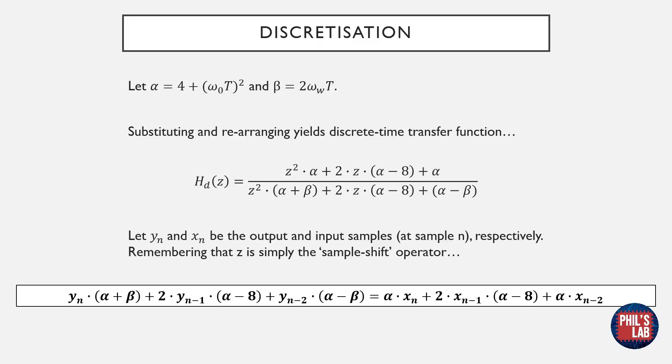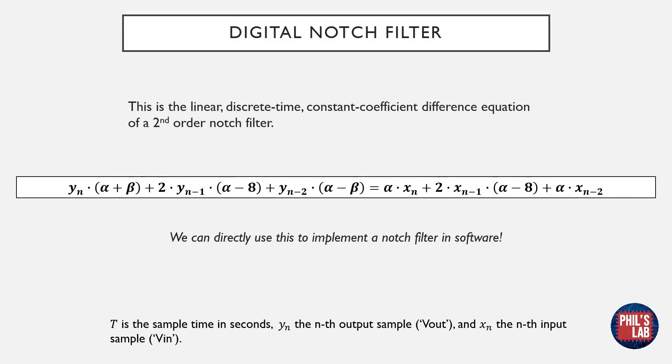Since we aren't really working with voltages anymore, I've renamed our input and output variables to x and y respectively. Remember, we are working in discrete time now with samples, so the index n denotes the sample number. By noting that Z is simply the sample shift operation, we can arrive at this difference equation down here. This is the linear discrete time constant coefficient difference equation of a second order notch filter, and in essence is the discrete time version of our analog electronic RLC prototype.